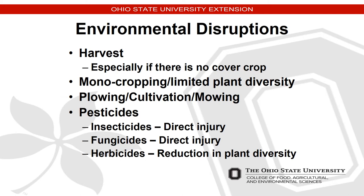Some major disruptions include plowing and cultivation or mowing of fields, which will destroy all plant material in the immediate vicinity. Then, of course, there are pesticides. Insecticides are obviously designed to kill insects directly. Fungicides may have indirect impacts — some actually have insecticidal qualities. And herbicides reduce plant diversity in the local area.